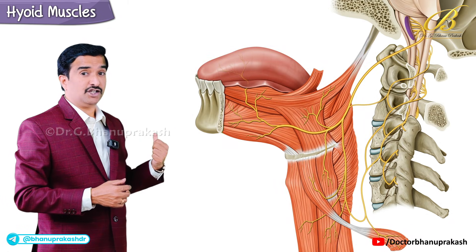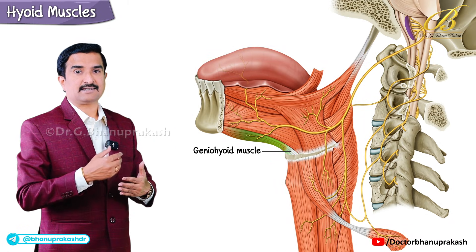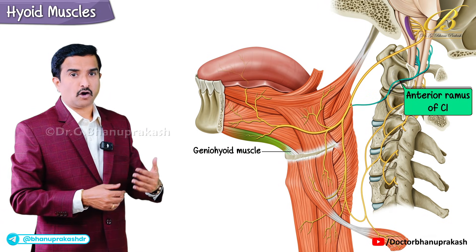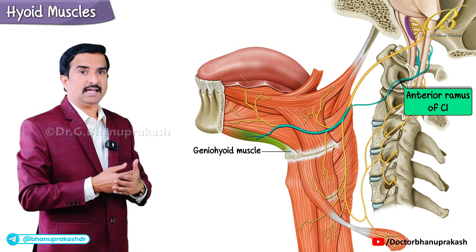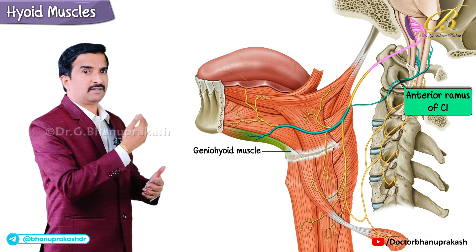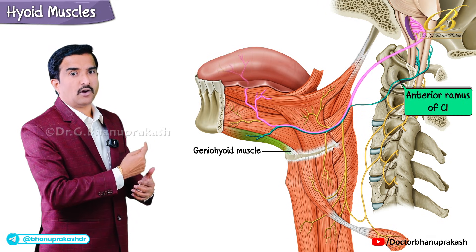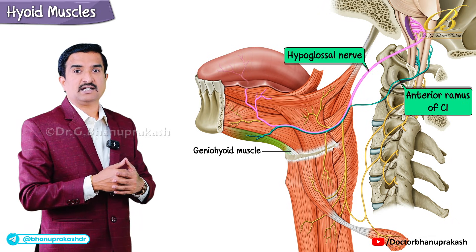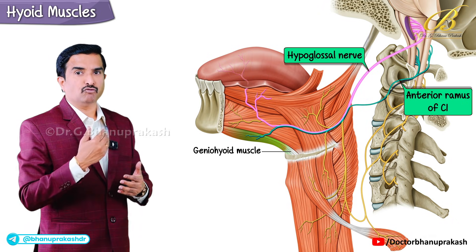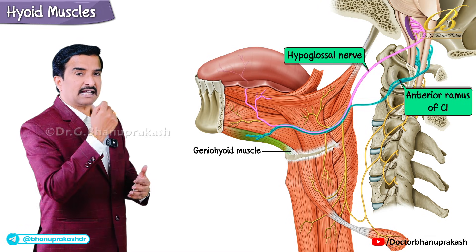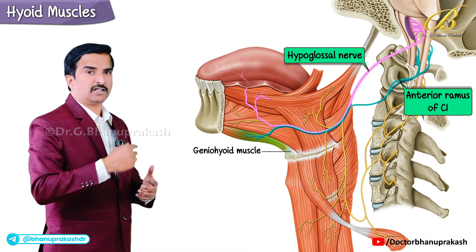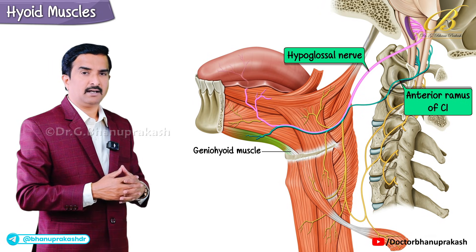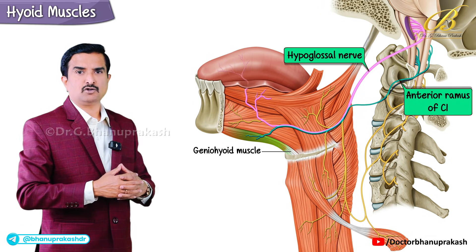Finally, the geniohyoid gets its nerve supply from the anterior ramus of C1, but here is the catch: it reaches the muscle by traveling alongside the hypoglossal nerve. So even though the hypoglossal nerve is mainly for tongue movement, C1 fibers ride with it to innervate this particular muscle. That covers the nerve supply of the suprahyoid muscles.